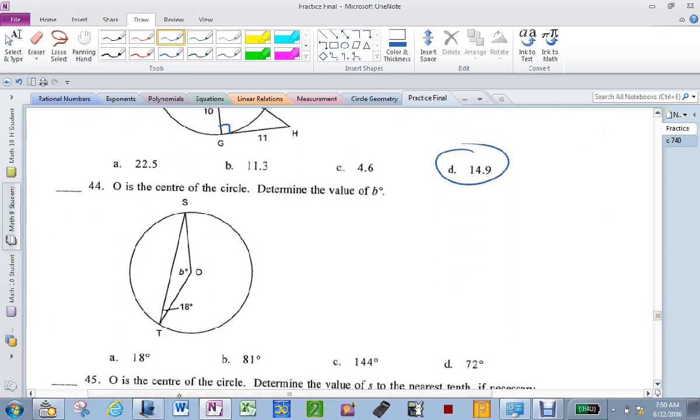You just saw this question on your last test. Radius, radius, which makes these two the same. 18 and 18. Which means B has to be 180 minus 36, which is 144.